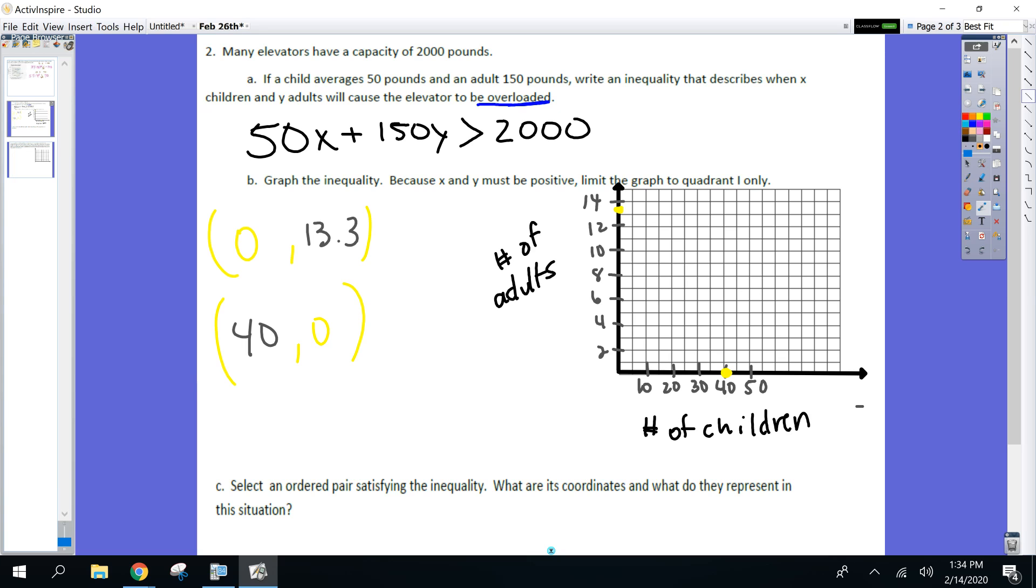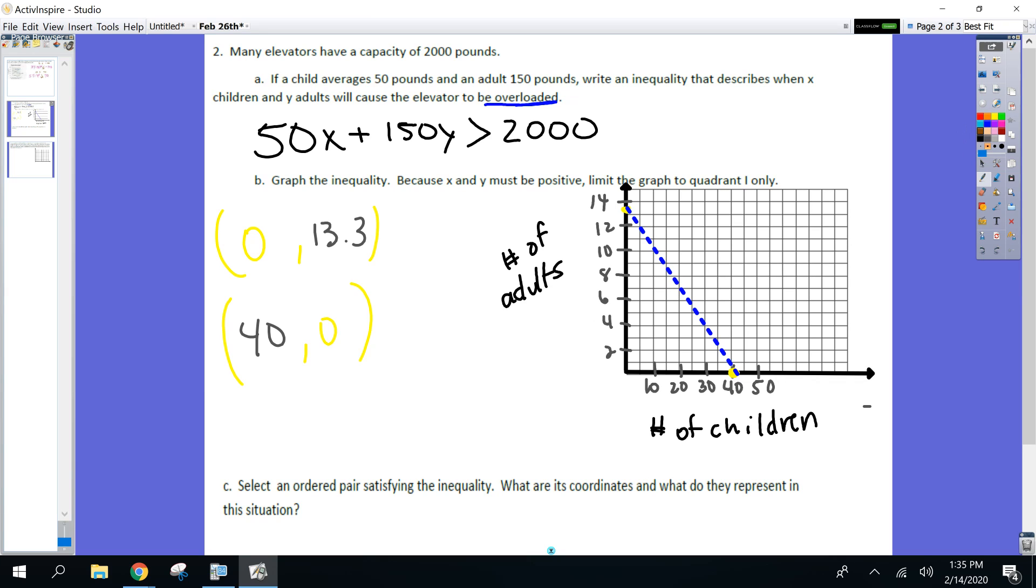You guys that are grabbing your straight edge. What type of line? Dotted. It's not or equal to. We've got to make this thing dotted. Are you guys ready to test 0, 0? What do we get on the left of the inequality? Is 0 greater than 2,000? I don't think so. So we're shading above the line, away from 0, 0.